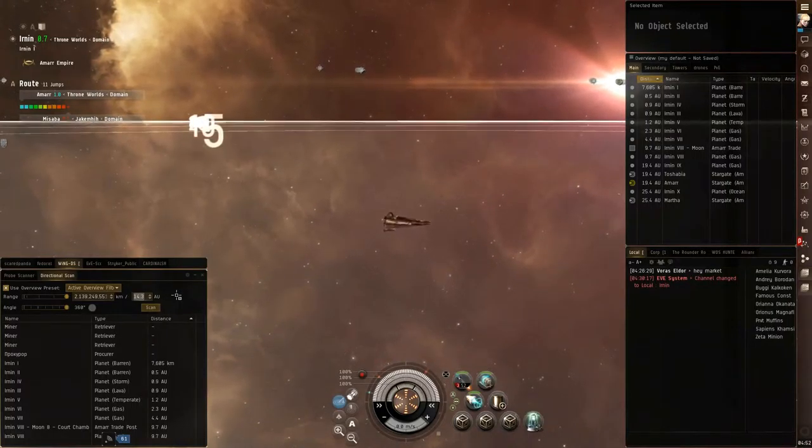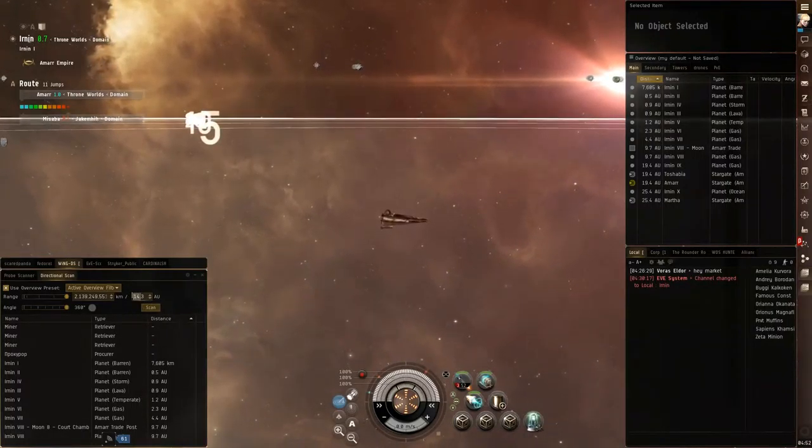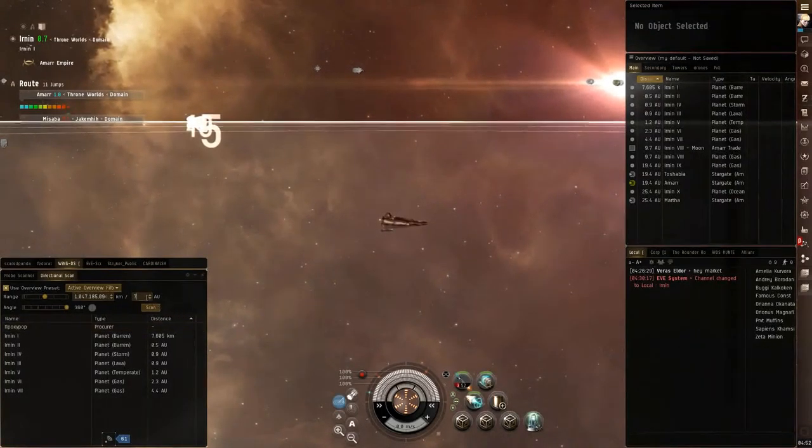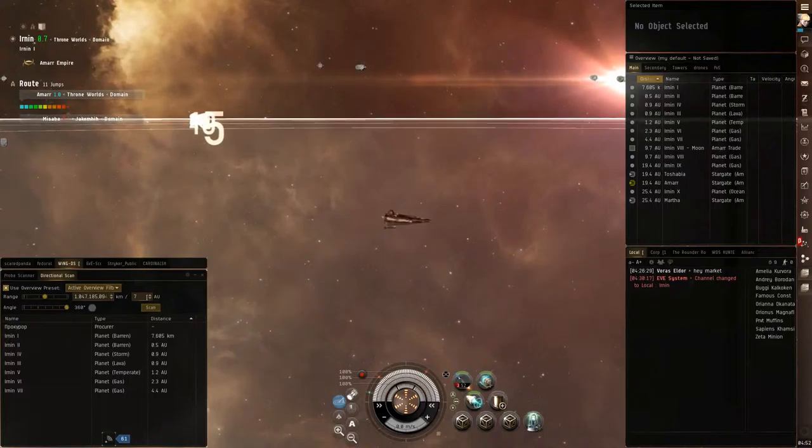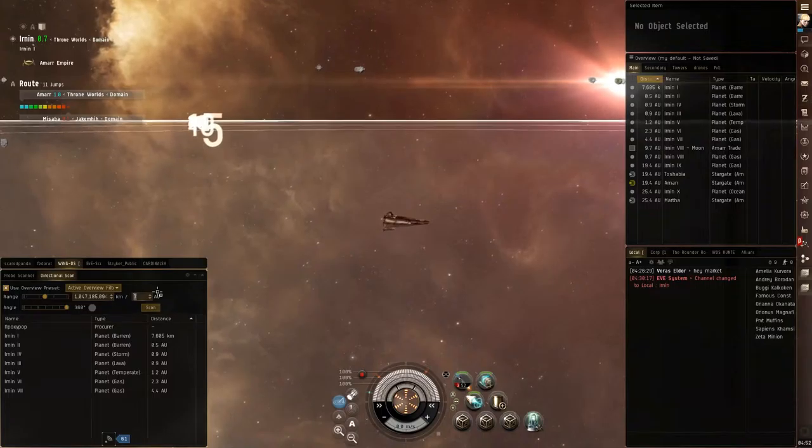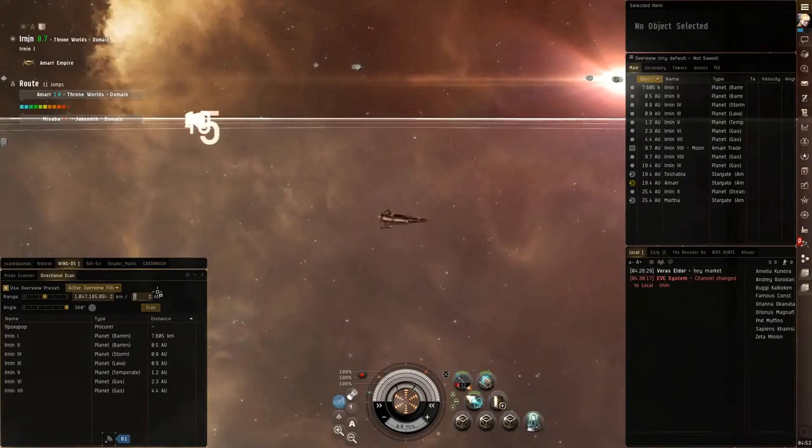What you can do is you can set this to the max range and then click scan, and you can see that there are actually a few ships, three retrievers and one procurer, within 14 astronomical units of my ship right now. But if you'll notice, they actually don't give me the distance that I am from these ships. So even though I can see that there are ships within that range, I can't actually figure out where they are exactly.